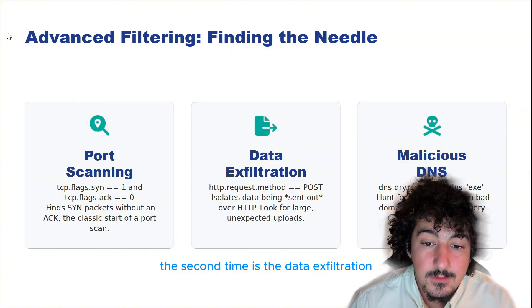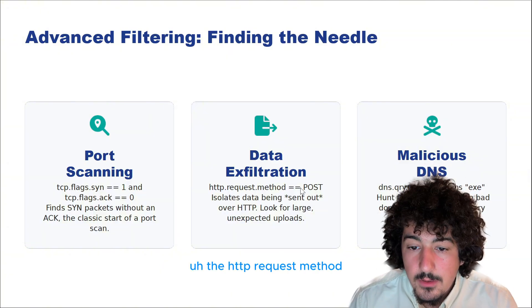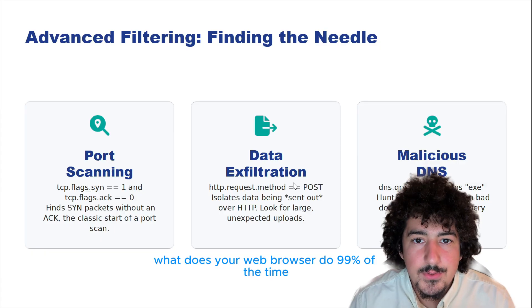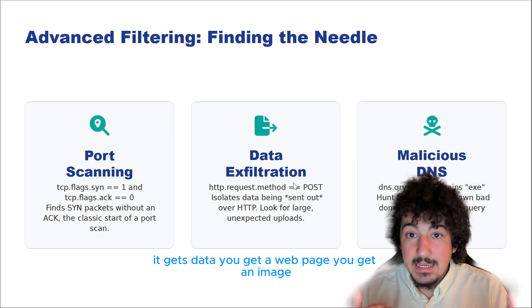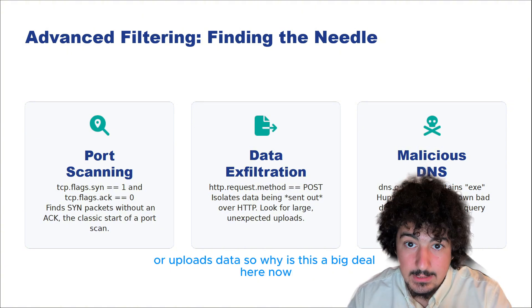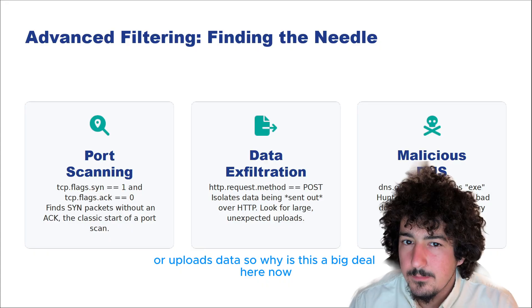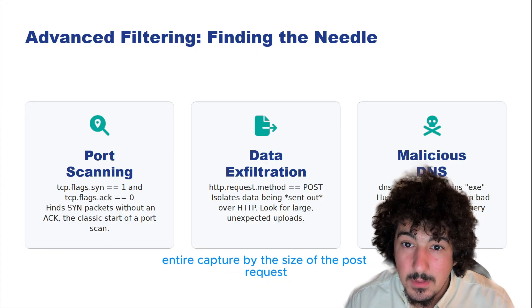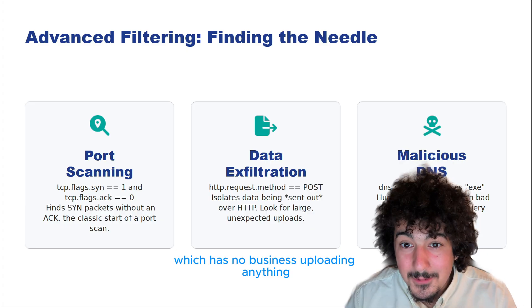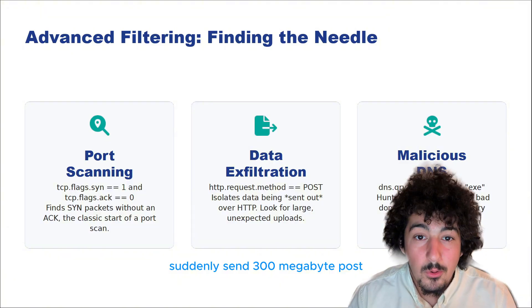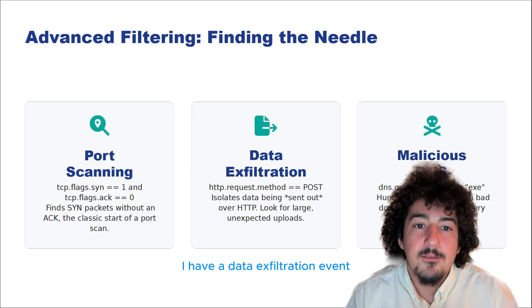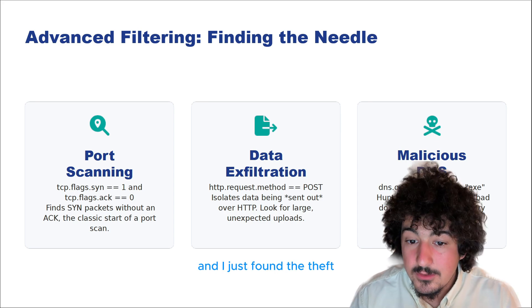The second example is data exfiltration: the HTTP request method POST. What does your web browser do 99% of the time? It gets data — you get a web page, you get an image. The POST request is when your computer sends or uploads data. As a threat hunter, I can sort my entire capture by the size of the POST request. And if I see a user's machine — which has no business uploading anything — suddenly send a 300 megabyte POST to a random IP in a country I don't do business with, I don't have a suspicion. I have a data exfiltration event and I just found the theft.